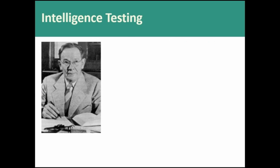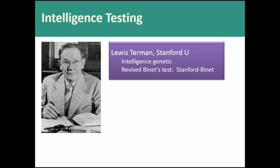In the US, we had a different take on the purpose of intelligence testing. Lewis Terman at Stanford University thought intelligence was genetic. American psychologists were very much influenced by Darwin — American psychology started out as functionalism and asked questions like what's the function of different mental capabilities and how does that help us survive and adapt. So Terman, around 1910, not long after Darwin's On the Origin of Species, was saying intelligence is something that is genetic, inheritable, and selected for.